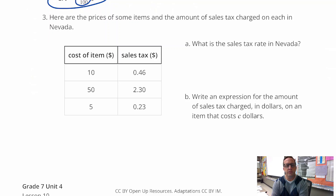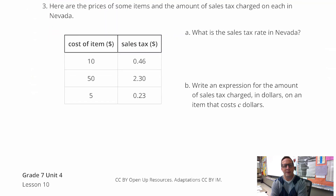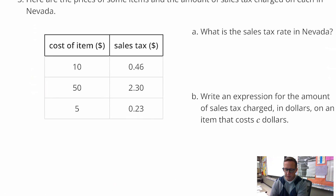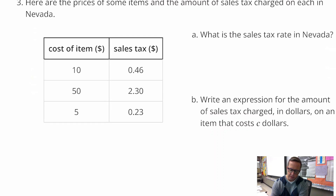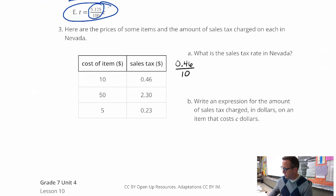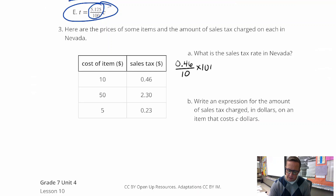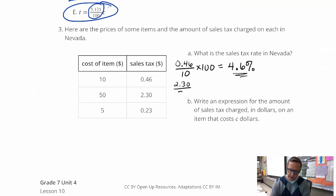For number three, here are some prices of items and the amount of sales tax charged on each in Nevada. What is the sales tax rate in Nevada? We can pick any two numbers and do part divided by whole. Let's do 0.46 divided by 10, then multiply by 100. You get 4.6%. You can do 2.30 divided by 50 times 100 and you get 4.6% again.